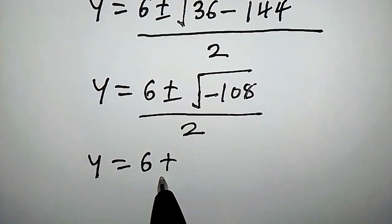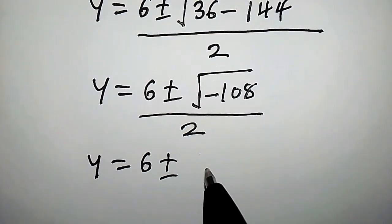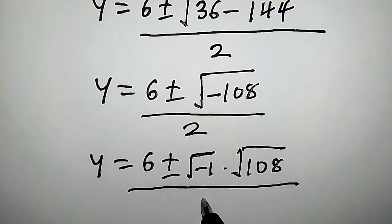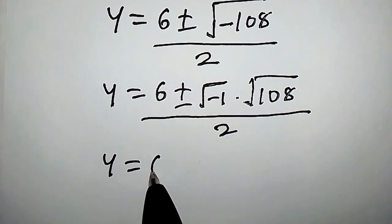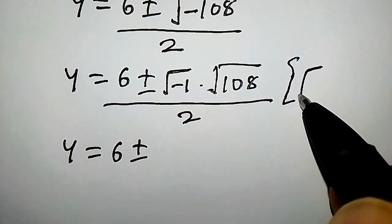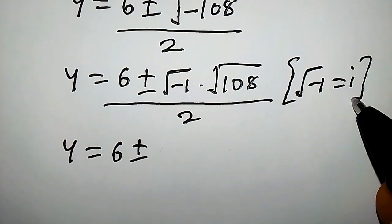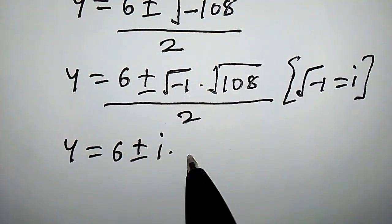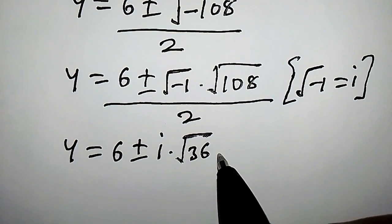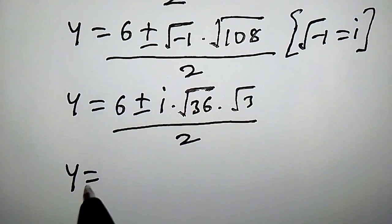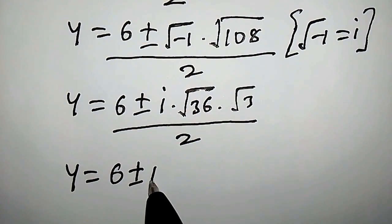y equals 6 plus or minus square root of minus 108, which can be written as square root of minus 1 times square root of 108, divided by 2. From complex numbers, recall that square root of minus 1 is i. We can also rewrite square root of 108 as square root of 36 times square root of 3. So y equals 6 plus or minus i times the square root of 108, divided by 2.